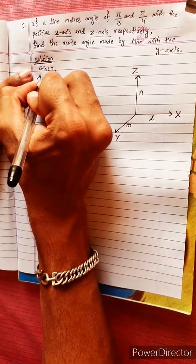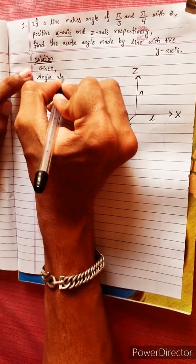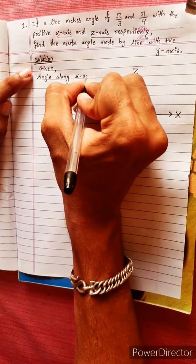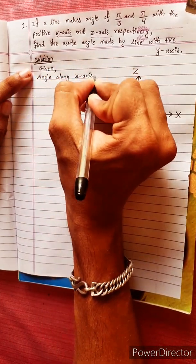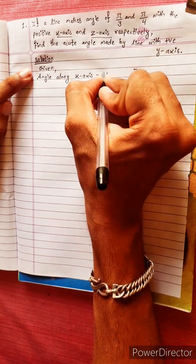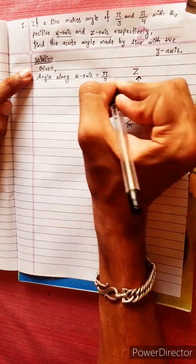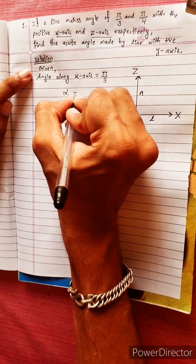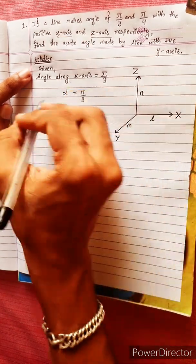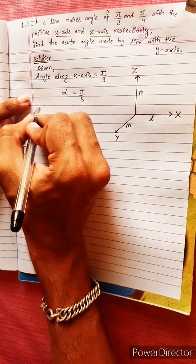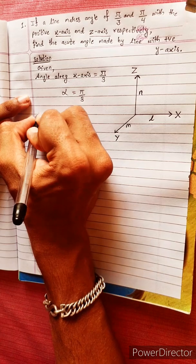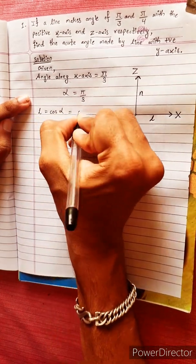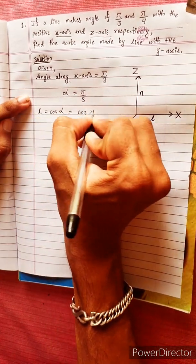Given: the angle along the x-axis. The x-axis represents the angle alpha. So alpha is equal to pi by 3. We will represent the direction cosine L, which equals cos alpha equals cos(pi/3).